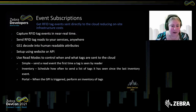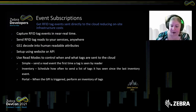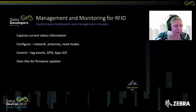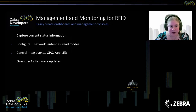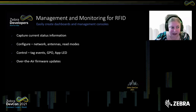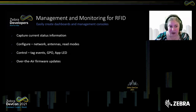There are several read modes which can be configured on the reader to determine how, where, and when the reader sends data to the cloud — not just a stream of events, but configurable timing and triggers. The other portion of this service set is management and monitoring: you can check current status, configure the network, antennas, read modes, control GPO, the app LED, and perform over-the-air firmware updates. Newly added is also the ability to capture logs out of the readers.